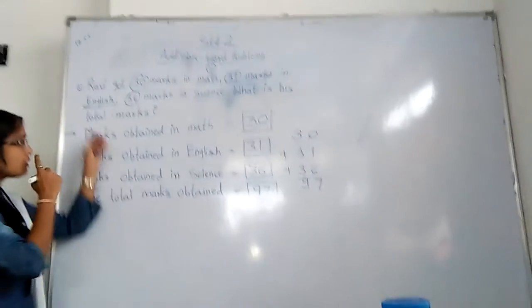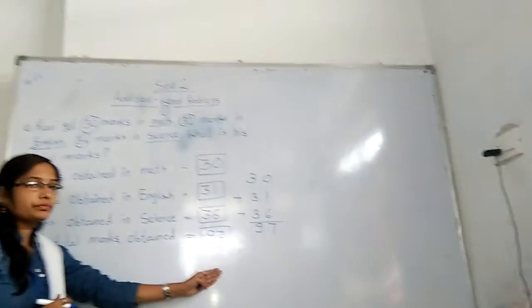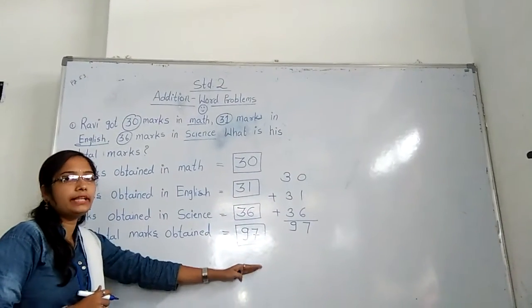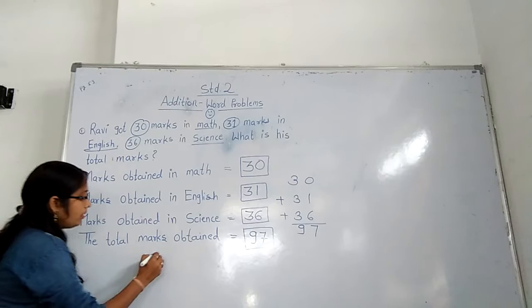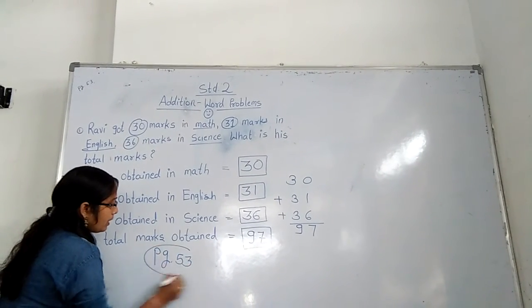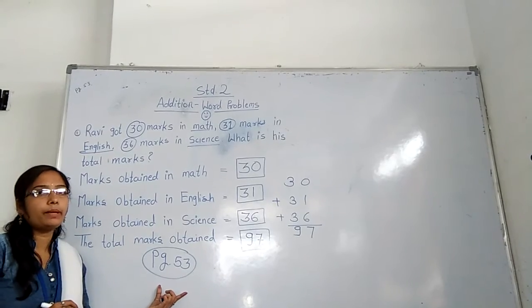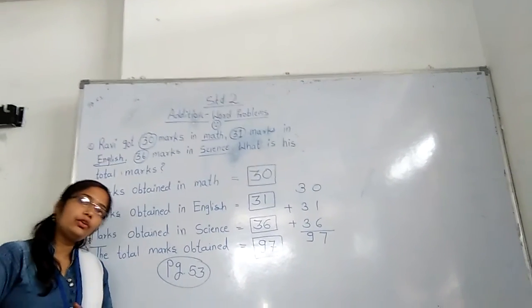It's very simple. They give us one word problem. Just write down the wording, keep the values, and add them. Okay. So on page number 53, there are many word problems. You have to solve those in your book and notebook also. Okay, thank you.